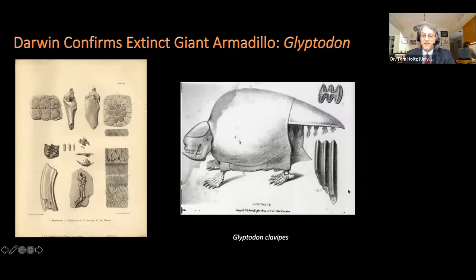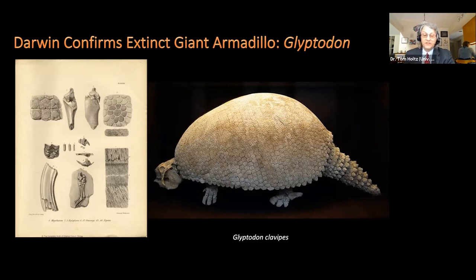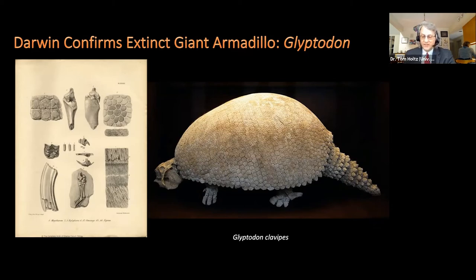Here's a very early reconstruction of Glyptodon. A group which we've now recently discovered, based on genomic evidence, apparently is nested as a type of armadillo — at least based on this DNA discovery.